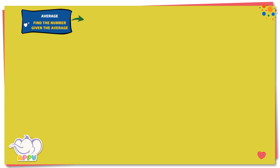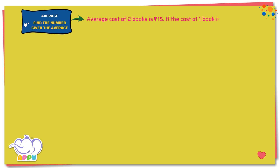Find the number given the average. The average cost of two books is 15 rupees. If the cost of one book is 20 rupees, what is the cost of the other book?